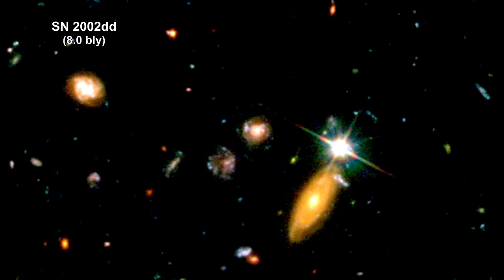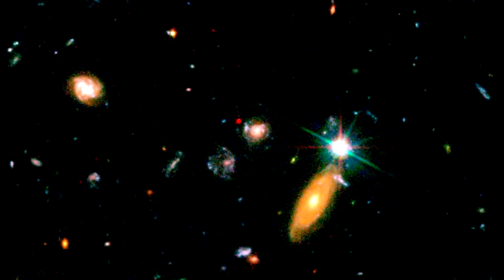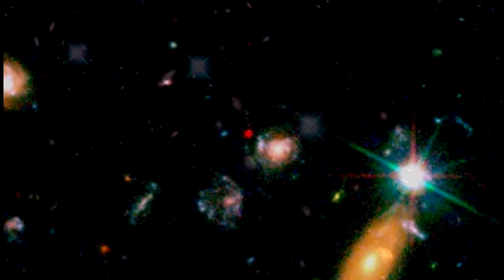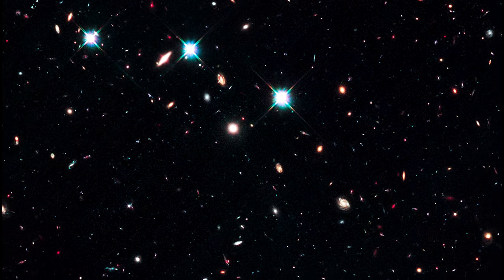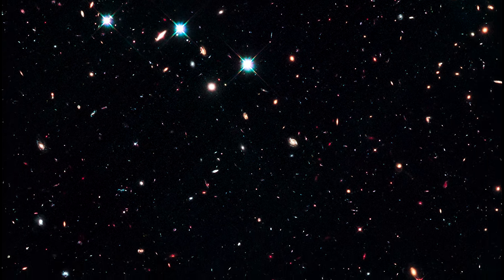Hubble is a supernova machine for probing the early universe. Here's a Type Ia it found that's approximately 8 billion light-years from Earth. If you recall, Type Ia supernovae represent one of our most important standard candles.